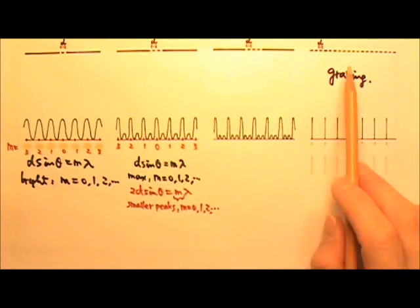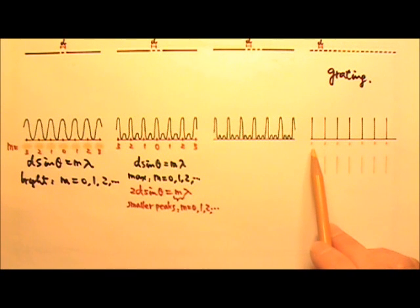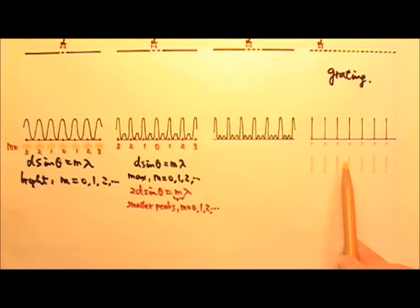When we shine light at a grating, the pattern on the screen would be sharp bright points if the light source is a point source, or sharp bright lines if the light source is long along the slit direction.